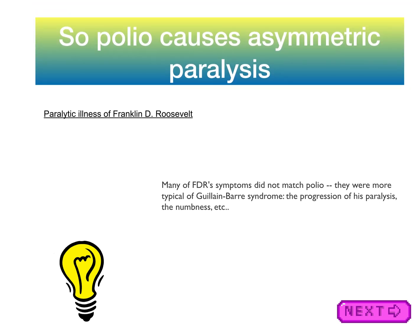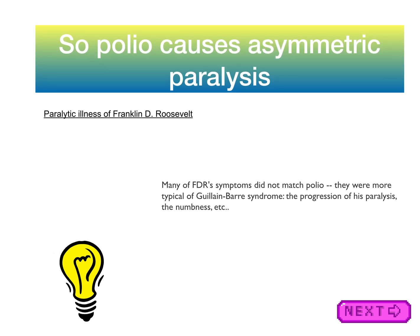Poliovirus causes asymmetric paralysis. Consider the paralytic illness of Franklin D. Roosevelt — people believed FDR had polio, but his symptoms did not actually match polio. They were more typical of Guillain-Barré syndrome. This illustrates why it's important to recognize the differentials of polio and how asymmetric paralysis can be mistaken for other conditions.